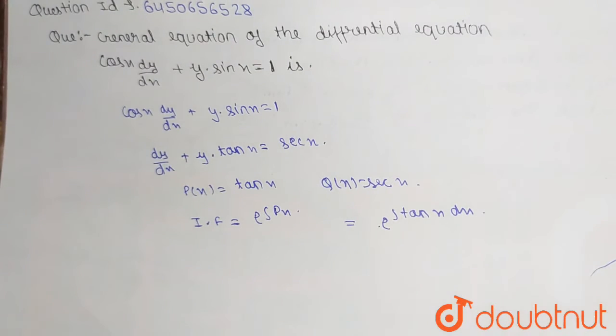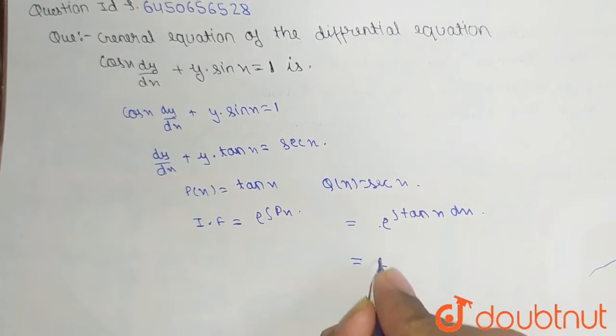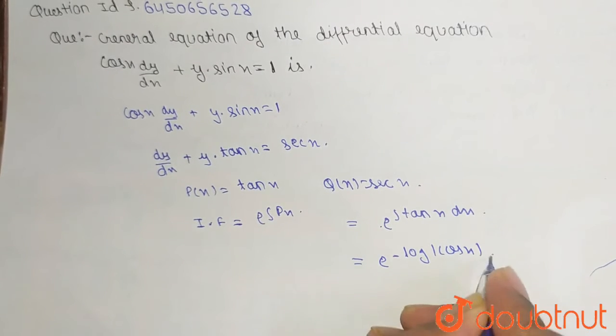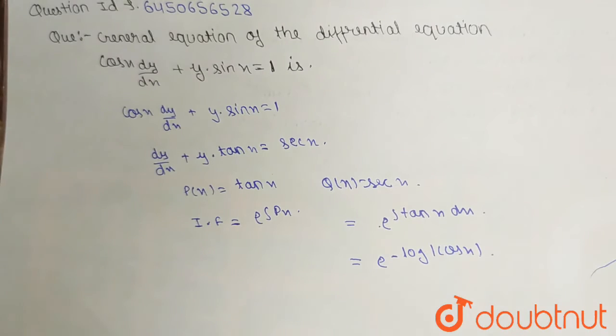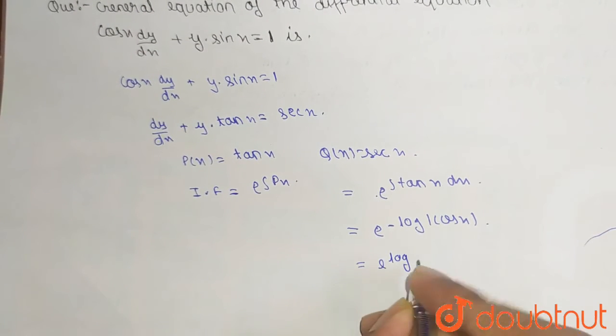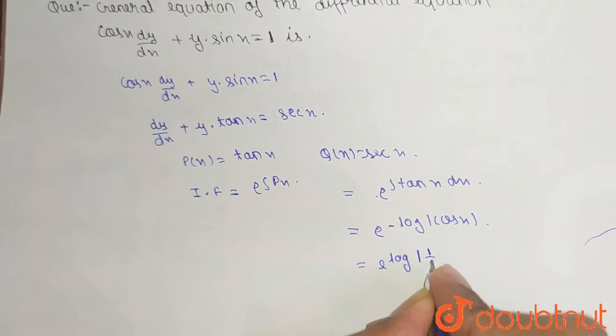The integration of tan x is e to the power minus log cos x. Now this minus sign goes into the bracket, so this becomes e to the power log 1 by cos x.